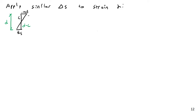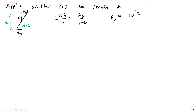Applying similar triangles: 0.003 over C is going to be equal to epsilon_s divided by d minus c. Or, epsilon_s is going to be equal to 0.003 times (d minus c) divided by c.